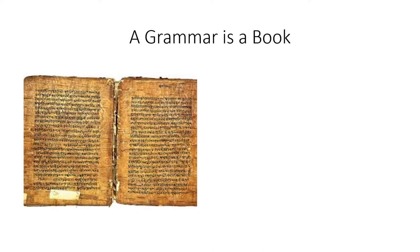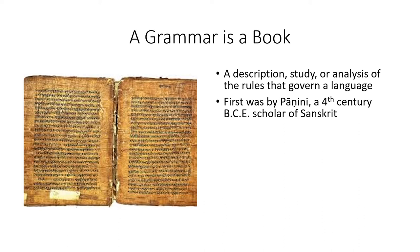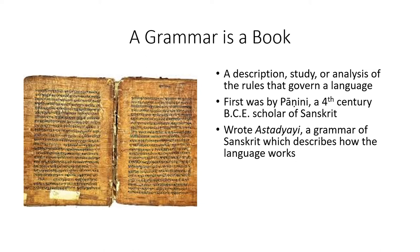A different step in understanding how a language works is understanding its grammar — generally the rules that govern how the language is put together, how you string words together to make a sentence. But a grammar is actually a book, a description or study or analysis of those rules. The very first one was written by a Sanskrit scholar who lived in India in the fourth century BCE, whose name was Panini, and it describes how Sanskrit works, how you put sentences together. The name of it is Ashtadhyayi — pardon my Sanskrit. This particular example is a copy done in the 17th century, written on birch bark in the city of Kashmir.